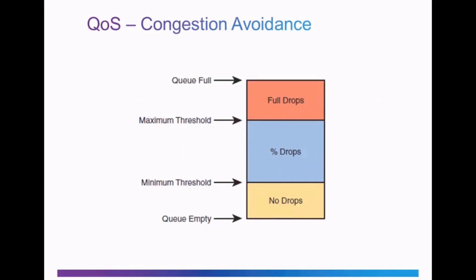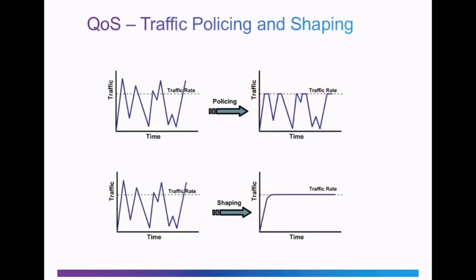The main mechanism of congestion avoidance in QoS on Cisco routers and switches is Weighted Random Early Detection, or WRED. With WRED, a percentage of packets are dropped once a queue exceeds the minimum threshold. If the queue exceeds the maximum threshold, packets are automatically dropped. In traffic policing, when the traffic rate reaches the configured maximum rate, excess traffic is dropped, resulting in an output rate that appears as a sawtooth pattern with crests and troughs, as shown in the top graph. With traffic shaping, excess packets are retained in a queue and rescheduled for later transmission, resulting in a smoothed packet output rate, as shown in the bottom graph.